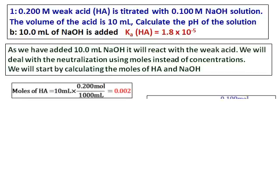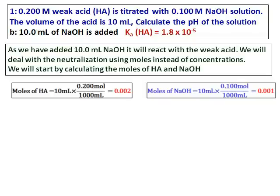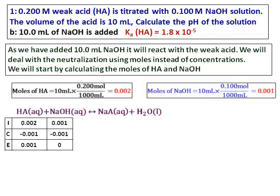We will start by calculating the moles. The moles of HA and NaOH are calculated, and the neutralization reaction is written. From the ICE table, you can see that the 0.001 moles of NaOH gets neutralized by the acid and becomes equal to zero. Now I have the moles of NaA, that is A minus, and the moles of HA.